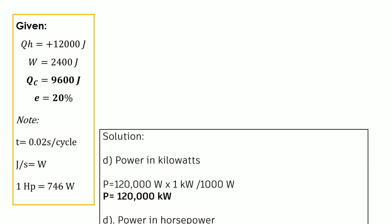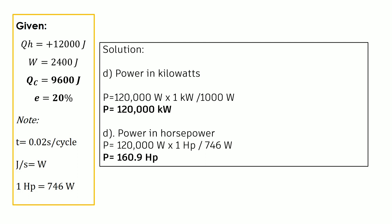For the power in kilowatts: 120,000 watts multiplied by 1 kilowatt per 1,000 watts gives 120 kilowatts. For power in horsepower: 120,000 watts multiplied by 1 horsepower per 746 watts gives approximately 160.9 horsepower. That is the solution for this problem.